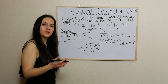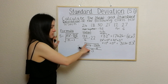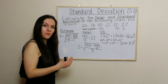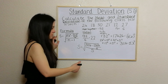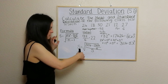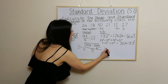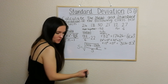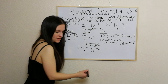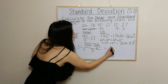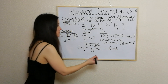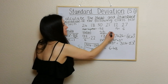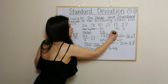You can work this out by putting it all into the calculator in one go, or do it individually and get your answer at the end. When we calculate it, the answer comes out as 6.48. So that is the standard deviation.